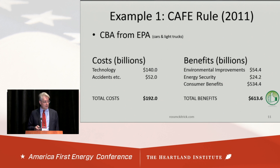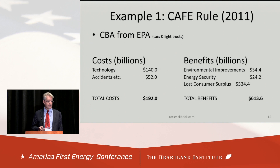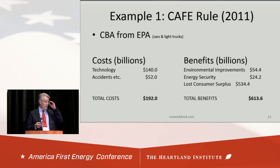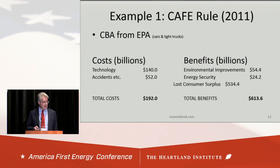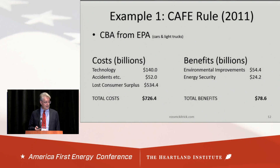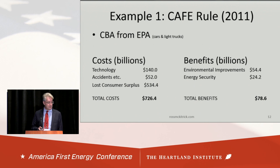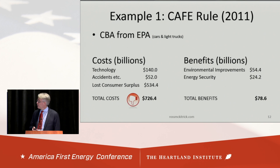Here's the problem though. Those consumer benefits — that's actually a loss of consumer surplus. They've miscategorized this loss. People are willing to pay more for fuel to drive the larger vehicles because they want the quality and features of the larger vehicles. So that's an estimate of the consumer surplus associated with the larger vehicles, and it belongs on the cost side. If we do the tallies correctly, we have total costs of $726 billion against benefits of $78.6 billion, and so obviously this rule should never have been approved.